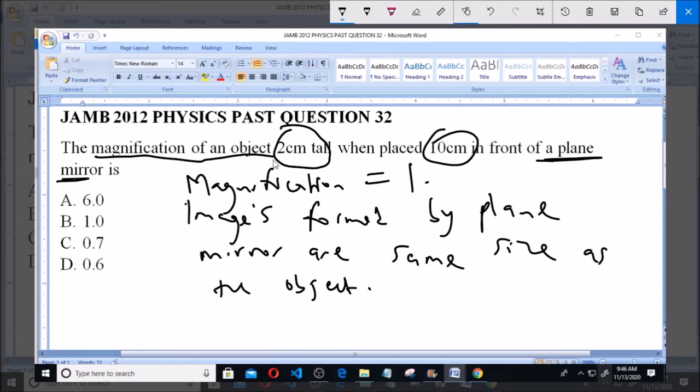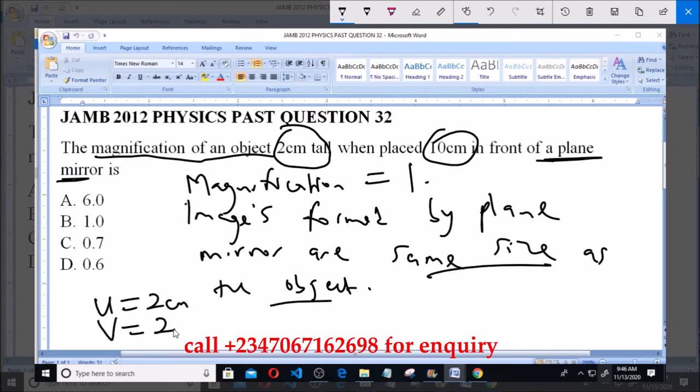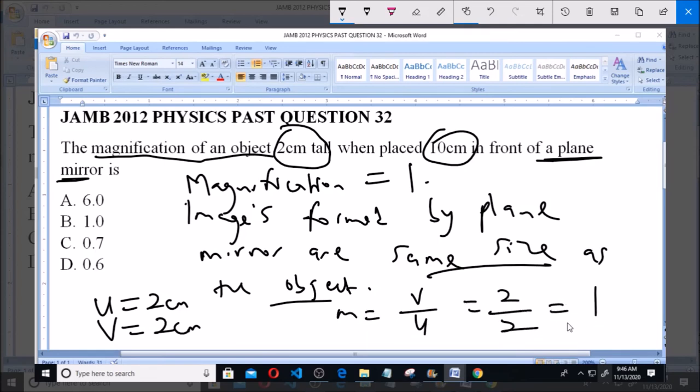If the object height is 2cm and the image height, like we said in plane mirror, is the same size as the object, so that means the image size will also be 2cm. Therefore, the magnification v over u will be equal to 2 over 2, and that is equal to 1.